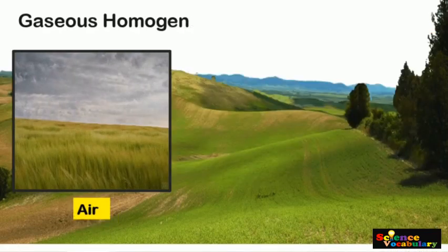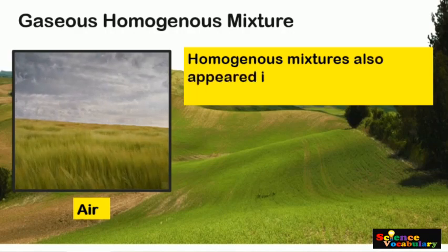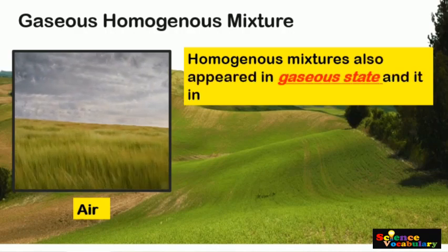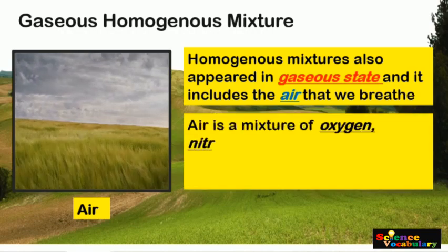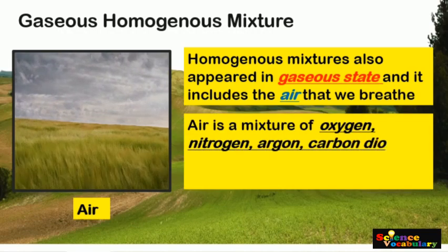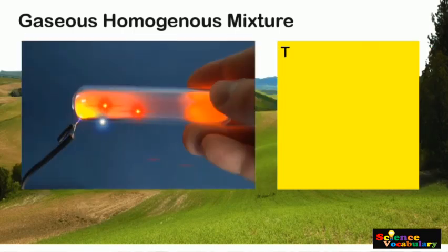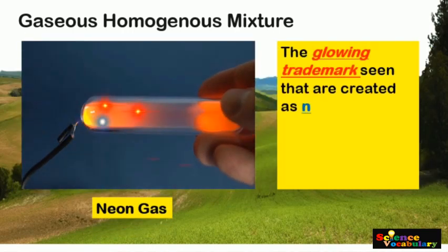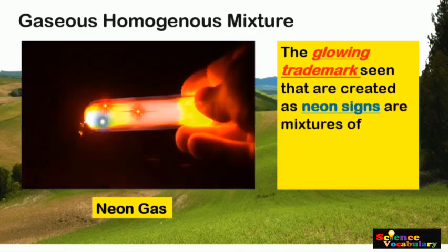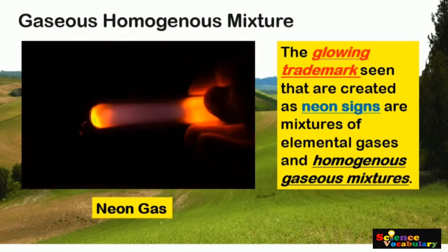Homogeneous mixtures also appear in a gaseous state, and this includes the air that we breathe. Air is a mixture of oxygen, nitrogen, argon, carbon dioxide, and other elements in smaller amounts. Another example is neon gas — the glowing signs seen as neon signs are mixtures of elemental gases and are homogeneous gaseous mixtures.